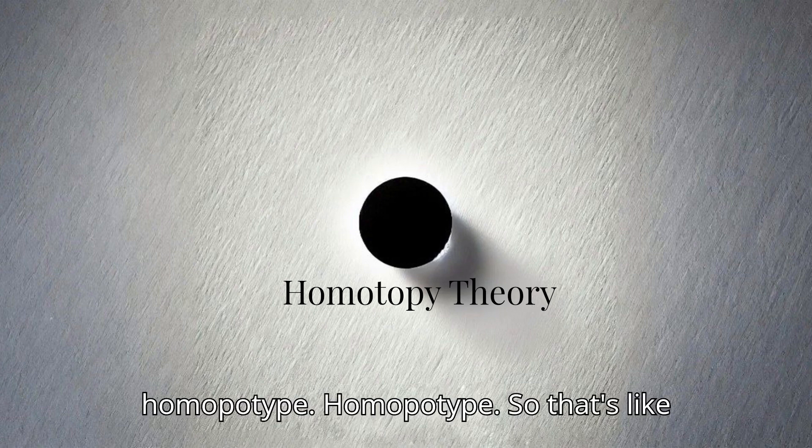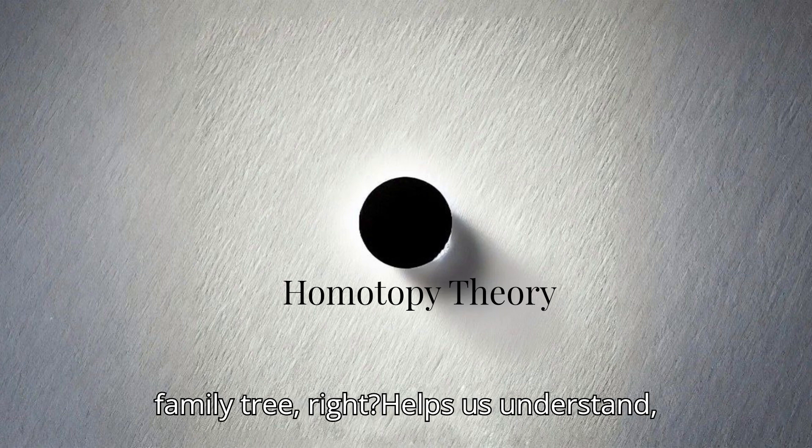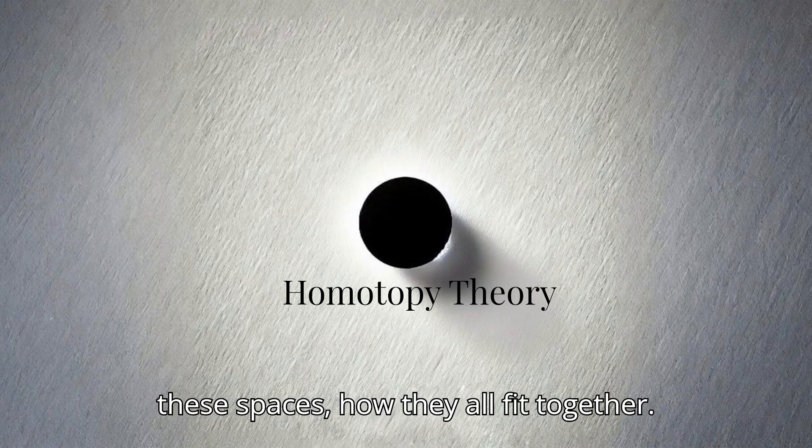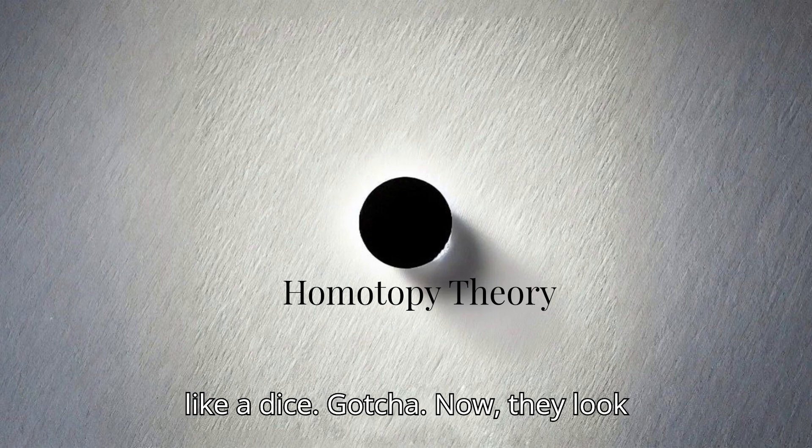I like it. And homotopy theory gives us these really powerful tools for classifying, for telling different topological spaces apart based on their homotopy type. Homotopy type. So that's like how they can transform into each other. Exactly. It's like we're grouping shapes together based on their shape-shifting abilities. That's cool. A shape-shifting family tree. Right. And it helps us understand the fundamental building blocks of these spaces, how they all fit together. All right, so give me an example. Okay. So let's say you've got a sphere, like a ball. Okay. And then you've got a cube, like a dice. Gotcha. Now they look pretty different. Yeah, totally different.